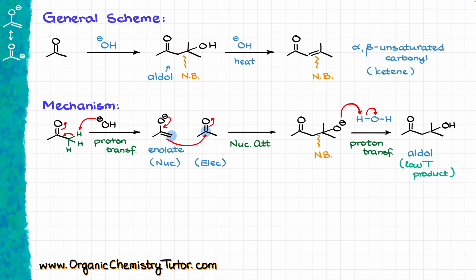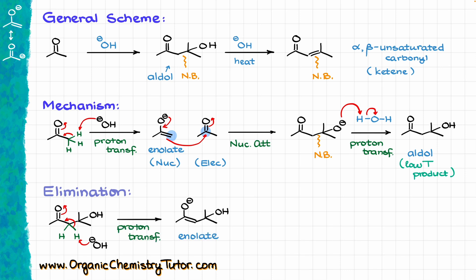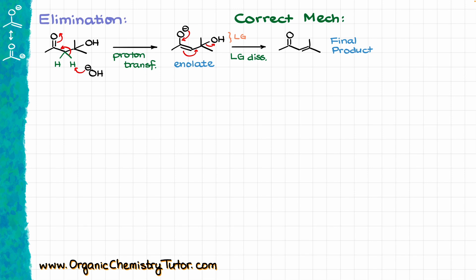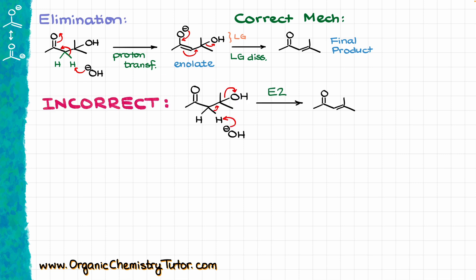If we are doing the reaction at elevated temperature, we take our aldol and first enolize it, giving us the corresponding enolate. Then from that enolate, we kick the leaving group out, forming our double bond and getting the alpha-beta unsaturated compound as our final product. Just like in the aldol condensation in acidic conditions, the elimination step must happen through the formation of the enolate. It might be tempting to write this as an E2-style reaction, but that is not correct. Always draw your enolate formation first, and then from the enolate, we have the leaving group dissociation.